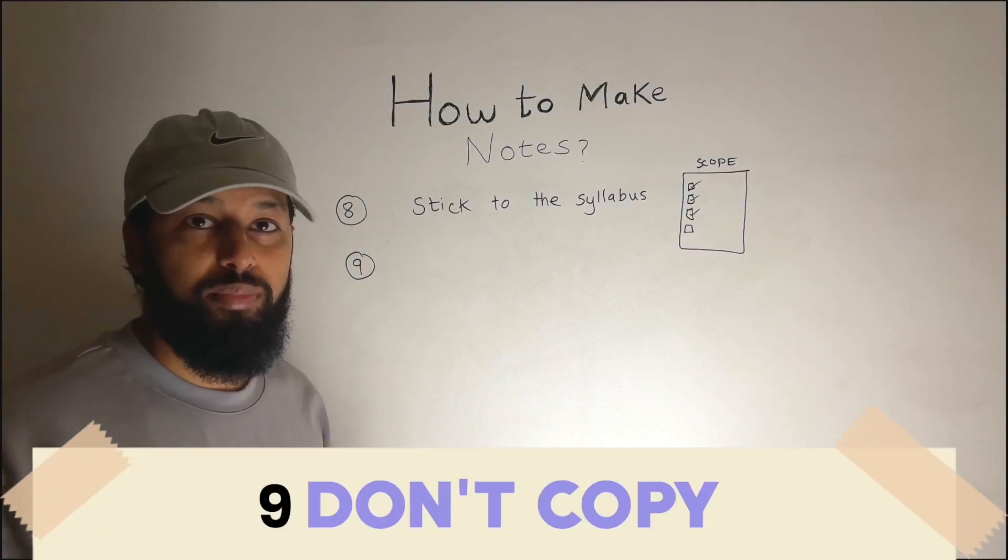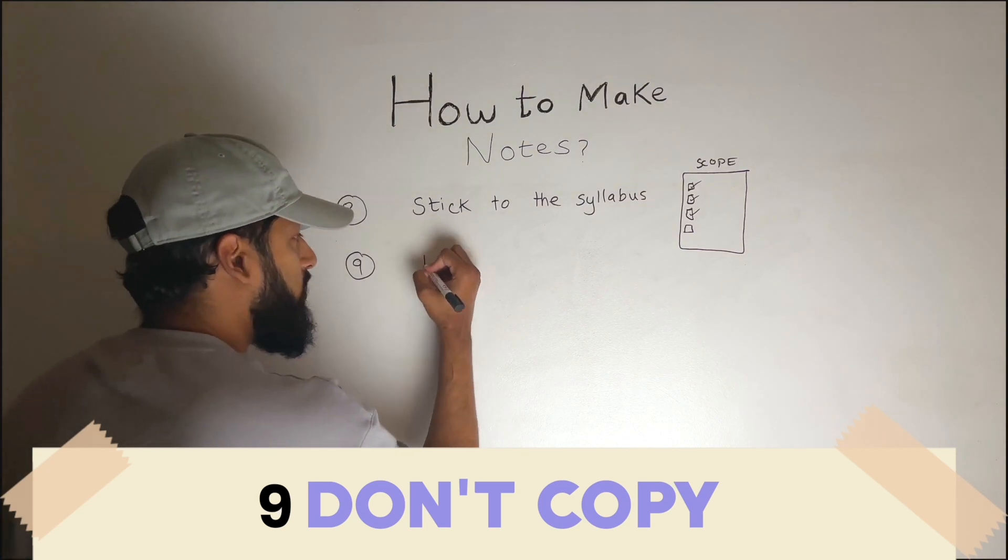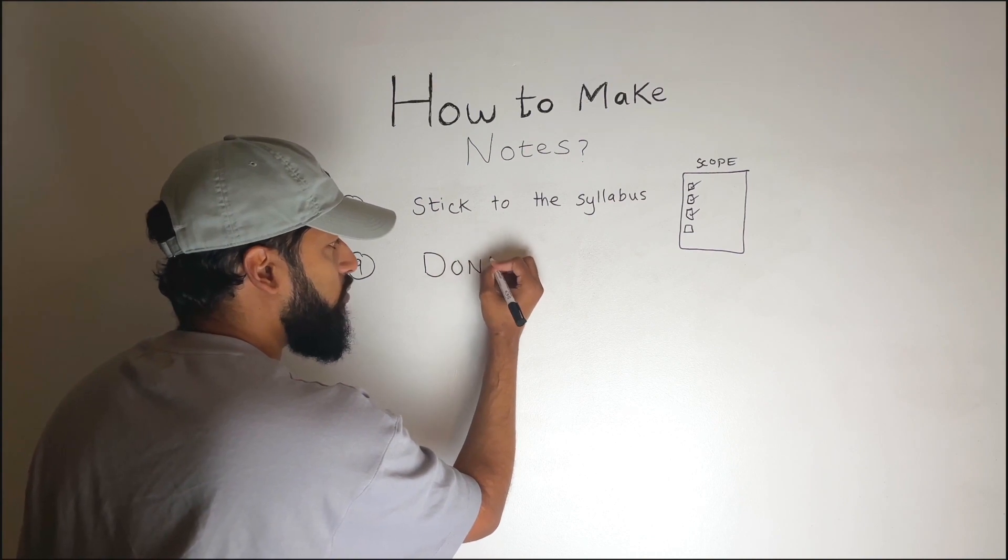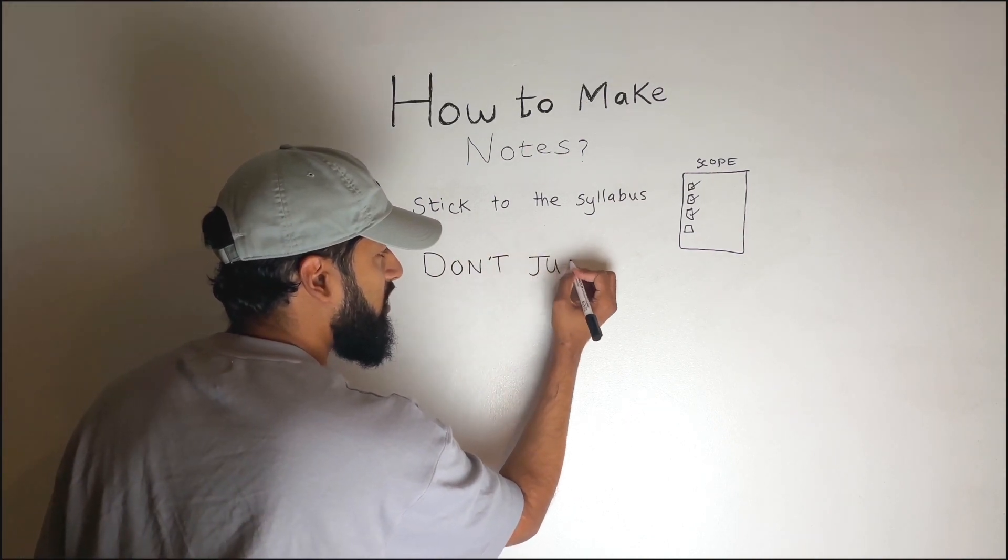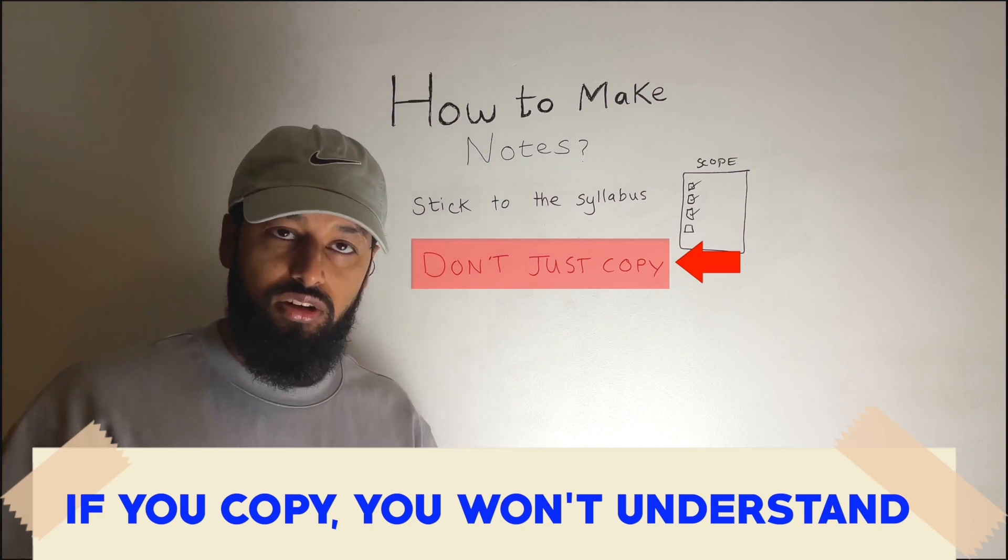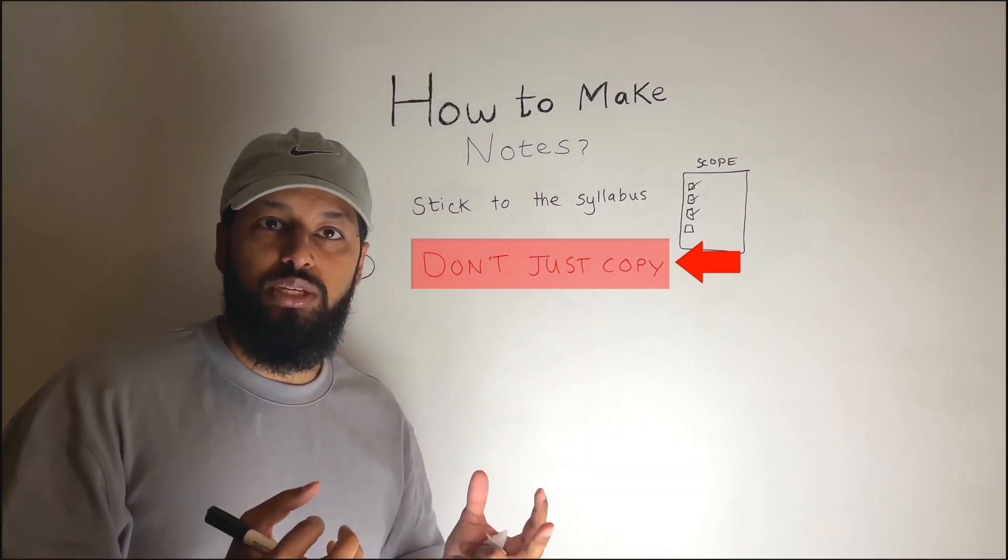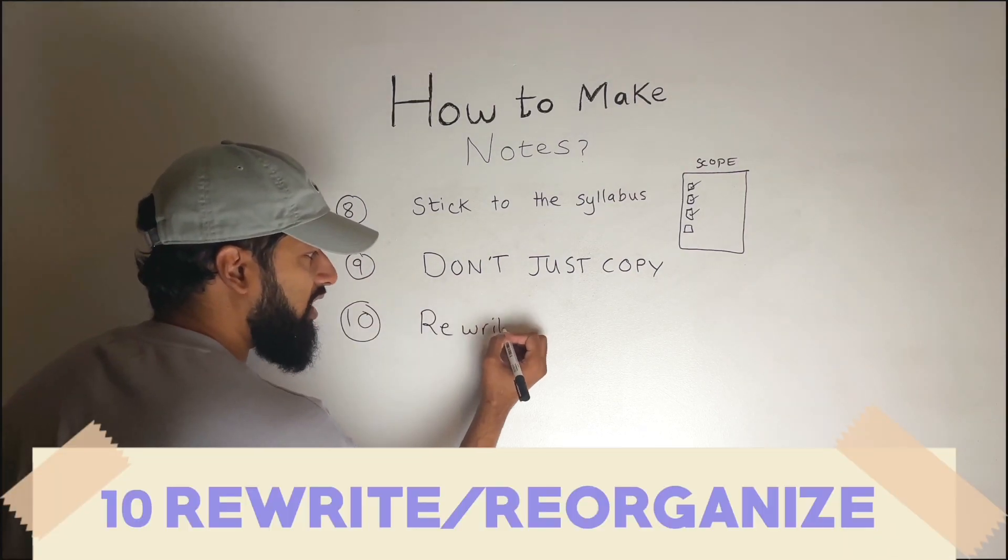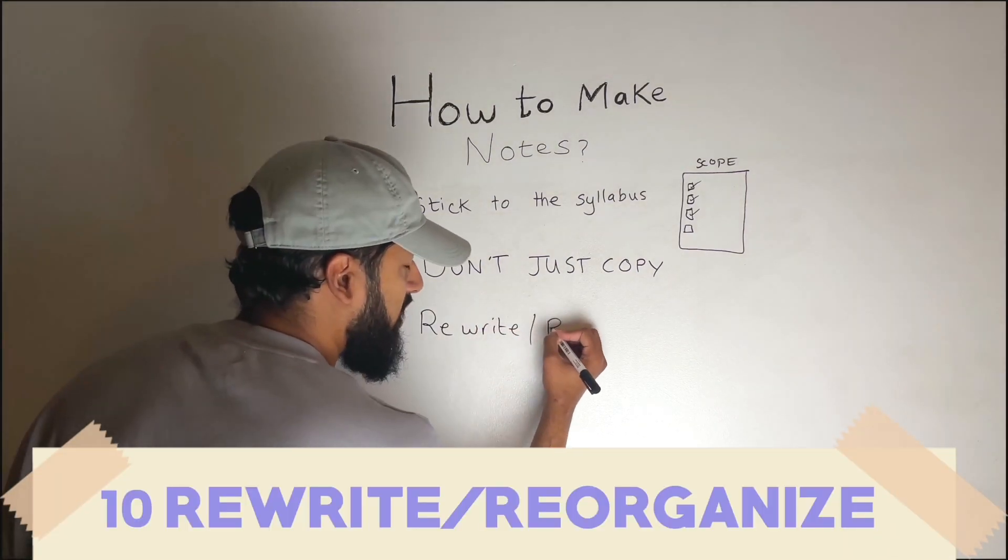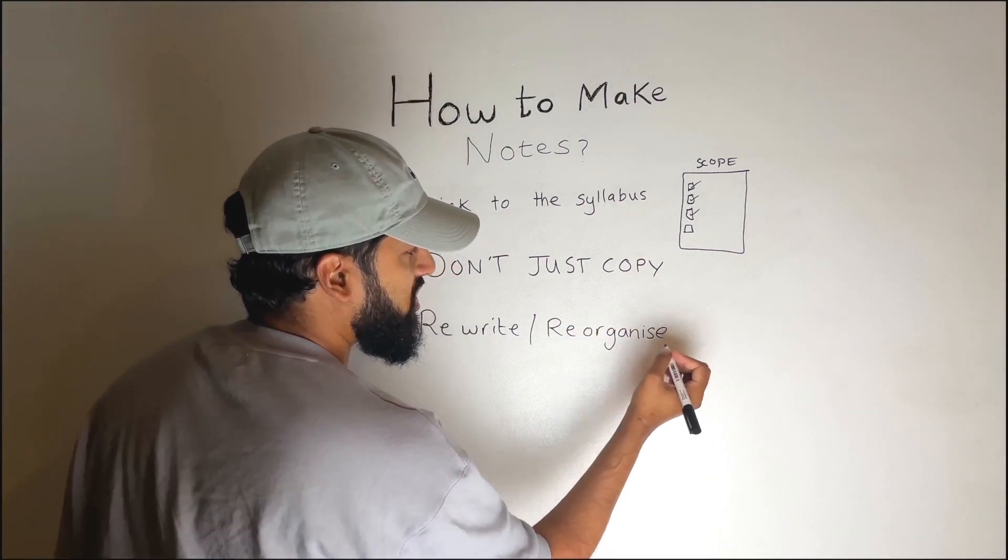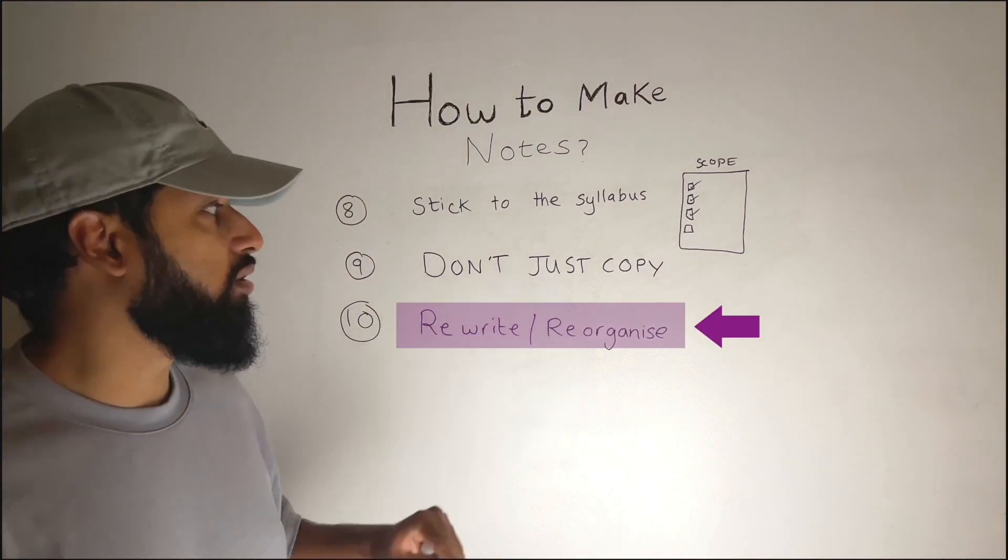This is where we get to the crux of the matter of how to make notes. So what we want to do is we want to make sure yes, we've got the scope, we've got the syllabus there. But we don't just want to copy. Don't just copy. Really? Why not? Do not do that because if you're just copying you are not understanding. The point of making notes is to digest this difficult piece of information. So what you really want to do is rewrite. You want to rewrite, reorganize the information and this is a good acid test. If you're just directly copying something out, there is a good chance you haven't done the notes properly.